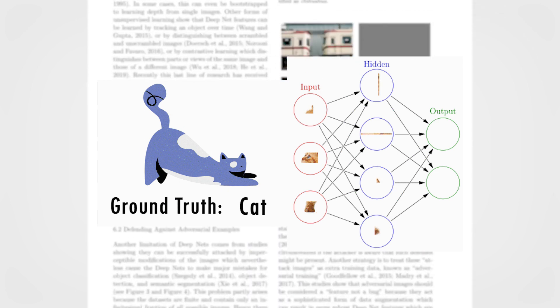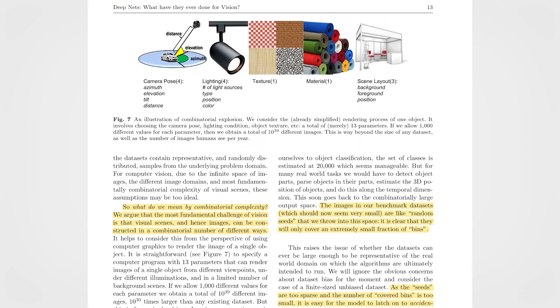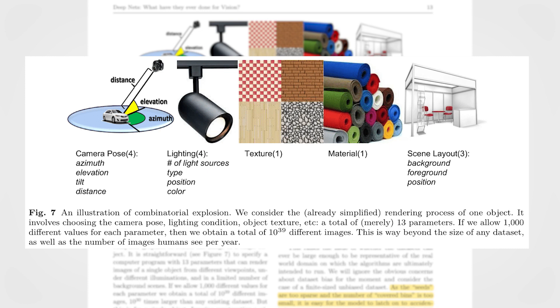In the paper, they call this the combinatorial complexity explosion of natural images. The combinatorial complexity comes from the multitude of possible variations within a natural image, like the camera pose, lighting, texture, material, background, the position of the objects, etc.